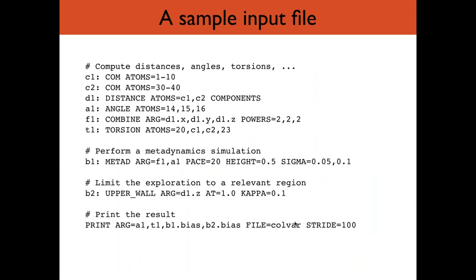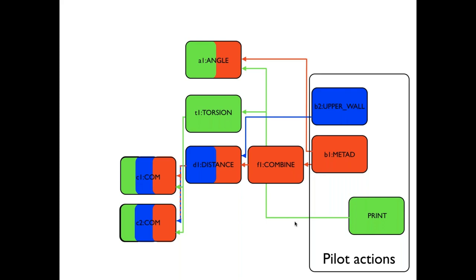One last point: if you look at the input and consider the quantity T1, the torsion, the only thing that needs it is the print command, which is only run every hundred steps. So it's computationally wasteful to calculate that torsion on every time step. We have what I call pilot actions — in this case the upper wall and the metadynamics bias need to be calculated on every step, and the print command every hundred steps. These pilot actions control when other commands are run, so that torsion is only calculated every hundred steps. For something more expensive like a coordination number, this can give a considerable speed-up.